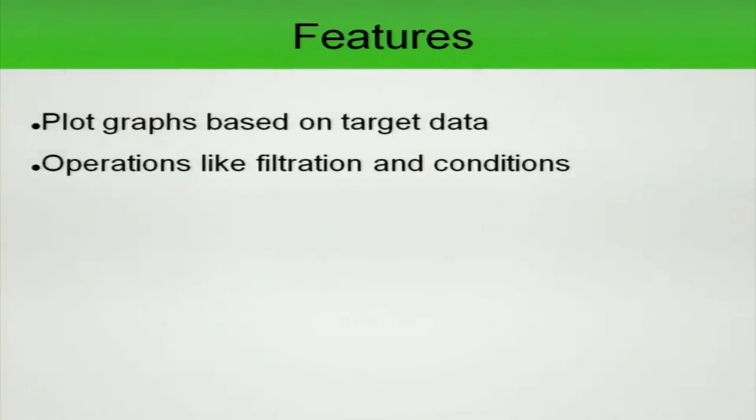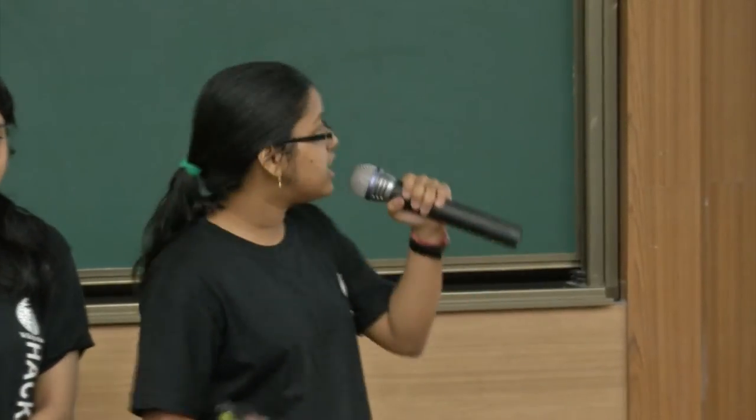The second feature is that we have provided various filtrations and conditions. By filtrations, I mean you can plot a graph of only those students whose name starts with P, contains P, or ends with P. Conditions include marks greater than 80, less than 80, or any other numerical condition. This covers both string filtrations and numerical conditions.